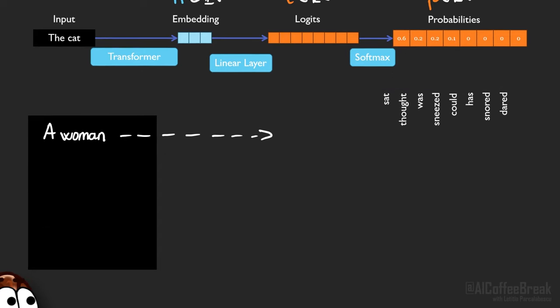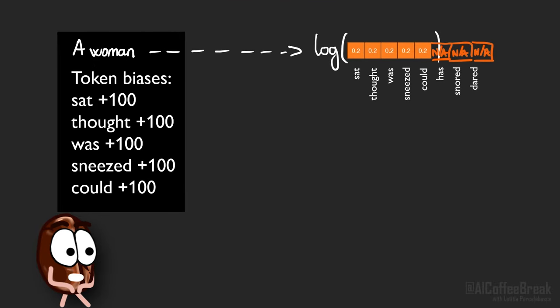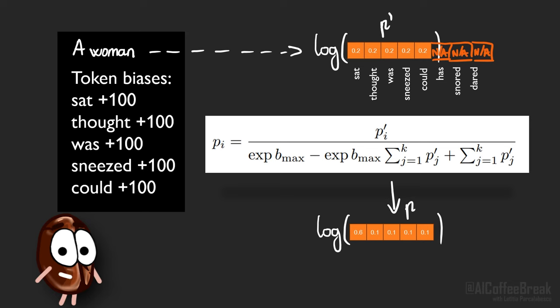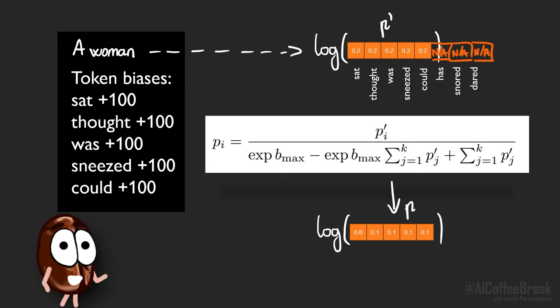Assume an API returns the top five logits. If we send tokens with a large enough bias, this will promote those five tokens into the top five, allowing us to observe their logprob. By subtracting the bias according to the softmax-specific formulas that the authors derived, one can de-bias the probabilities. So to summarize: we use token biases to push our target tokens into the top five, and we use math to compute what probabilities they would have had without the biases.